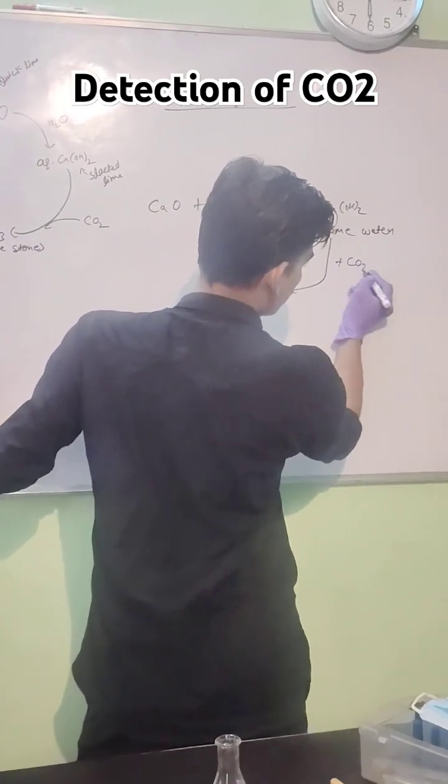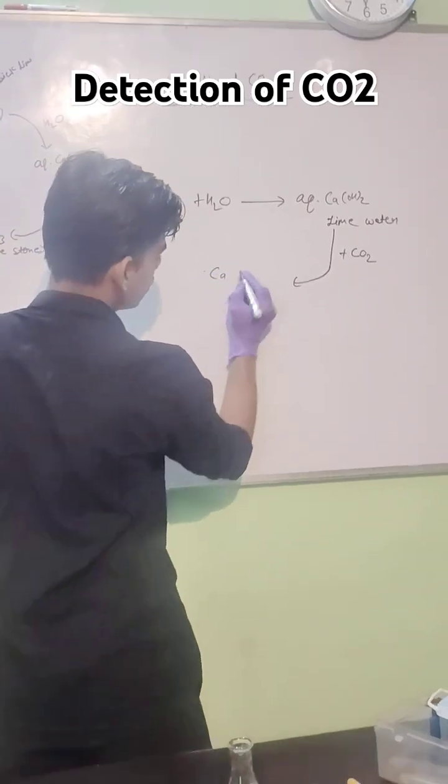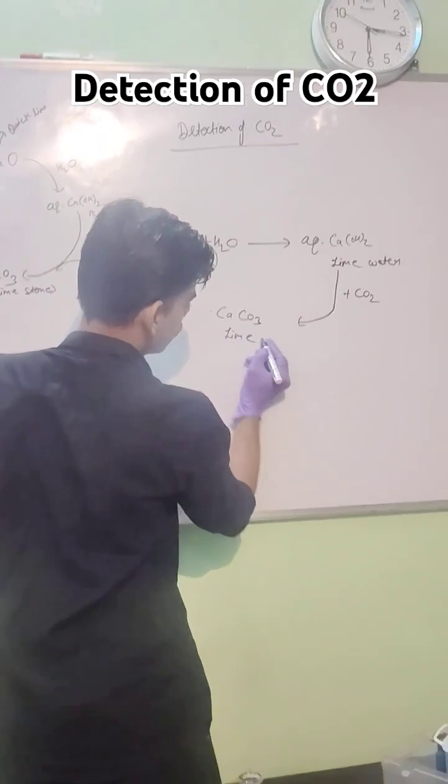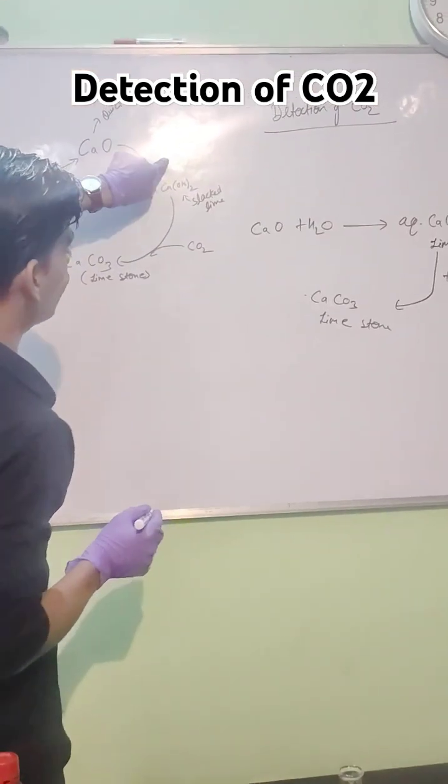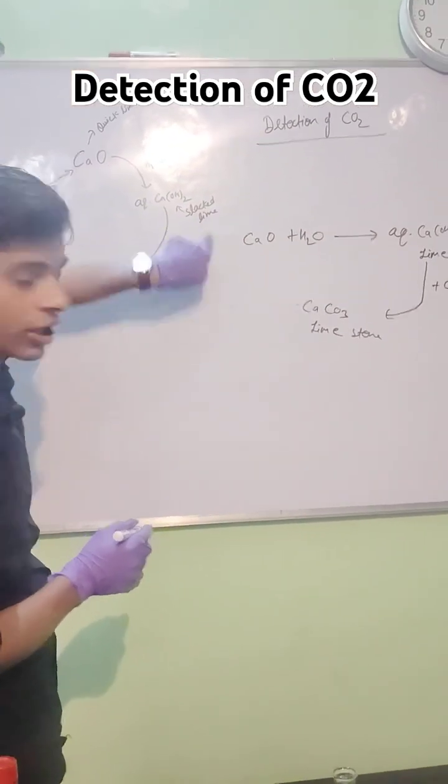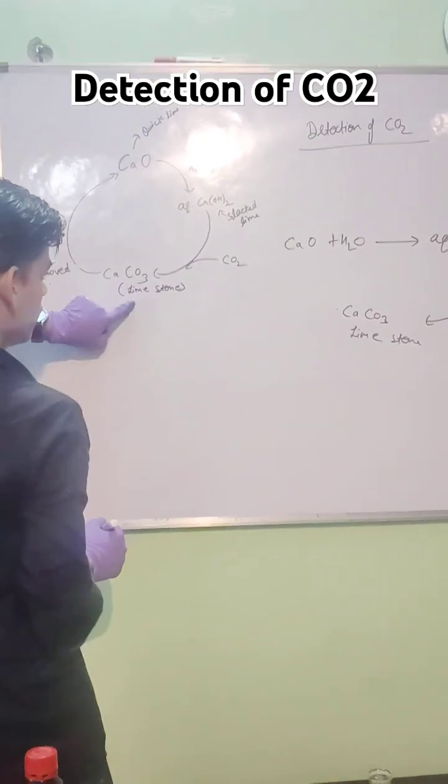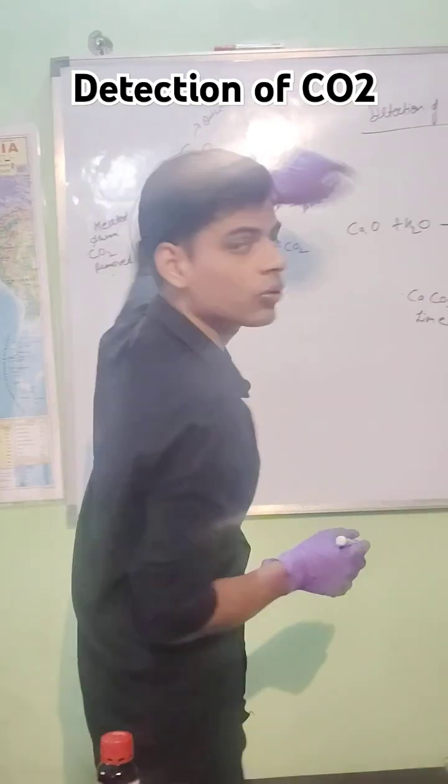When we add carbon dioxide, then what will happen? It turns to calcium carbonate, which is limestone. You can see here, this is quicklime water, then formation of lime water. And CO2 gives the formation of calcium carbonate. When we heat it, it again forms the quicklime.